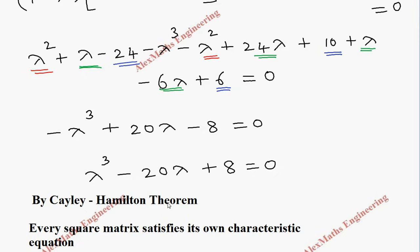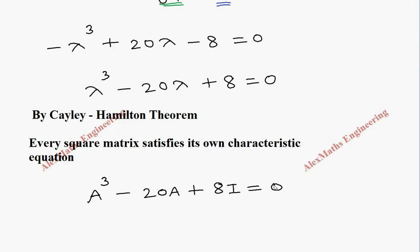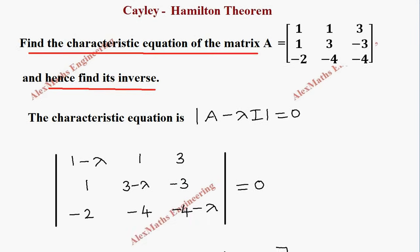By the Cayley-Hamilton theorem, every square matrix satisfies its own characteristic equation. So substituting capital A in place of lambda, we get A cubed minus 20A plus 8I equal to 0. We have completed the first part: finding the characteristic equation, and using the Cayley-Hamilton theorem we have it expressed in terms of matrix A.